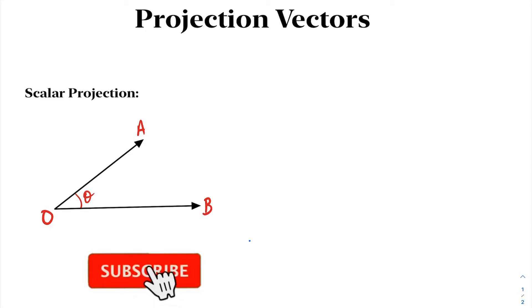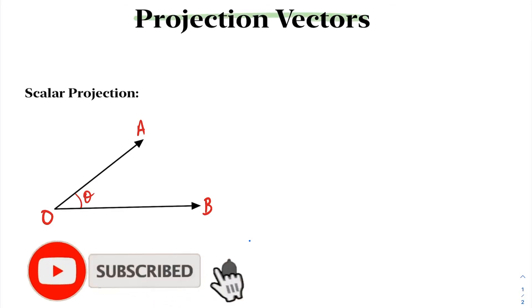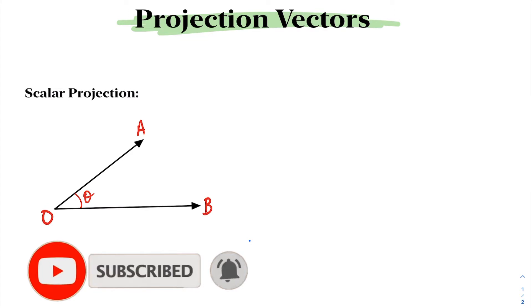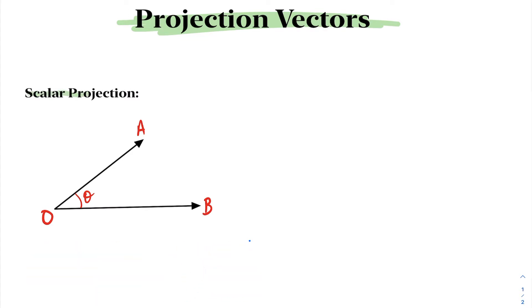In today's lesson, we're going to be talking about projection vectors. The first concept for projection vectors is this idea of a scalar projection. What we want to do here is we want to take vector A and find the scalar projection of it onto vector B.